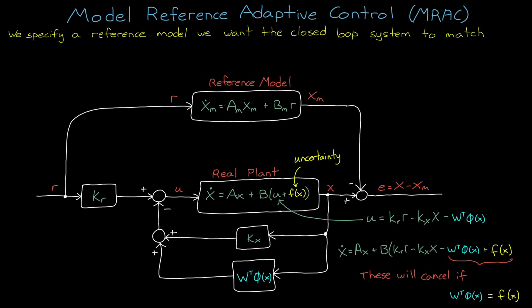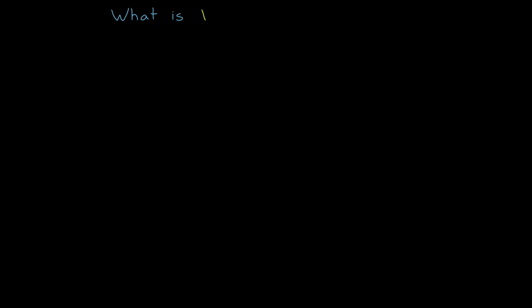Alright, so that's our new goal. We want to match W transpose phi to the unknown F of X. So what is W transpose times phi? Well, it can sort of be anything you want. Phi is a set of basis functions, or features, that you can choose, which can then be combined using the weighting vector W.